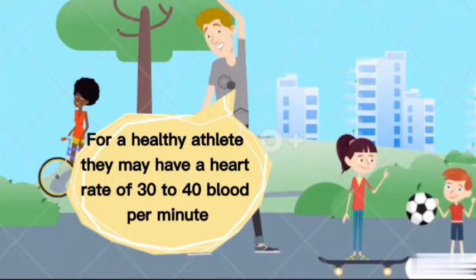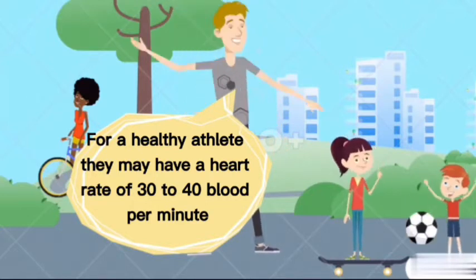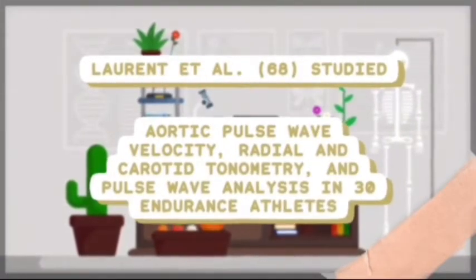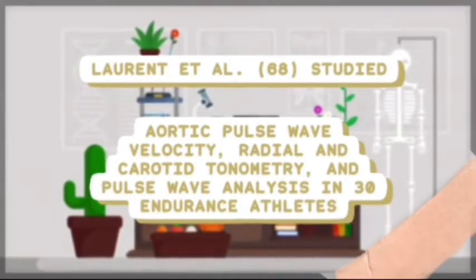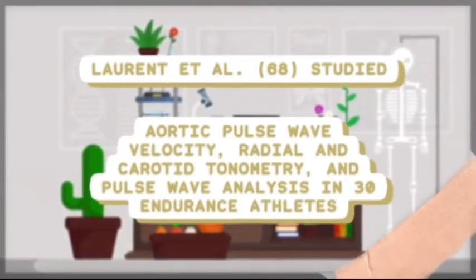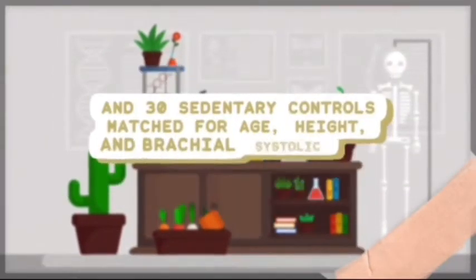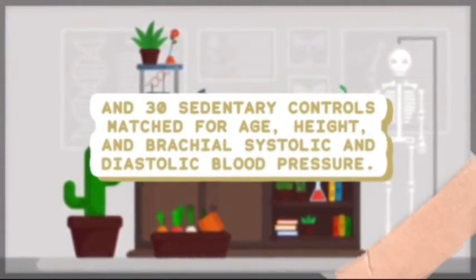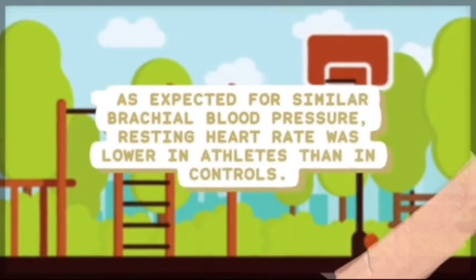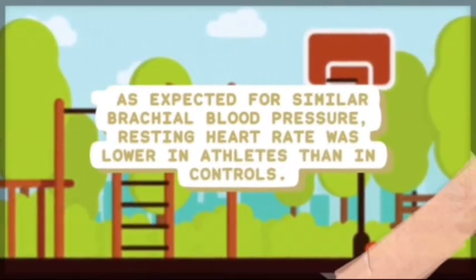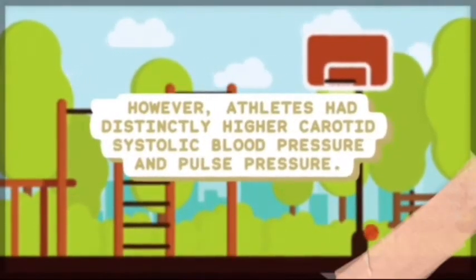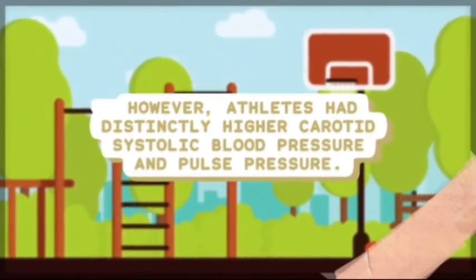But for a healthy athlete, they may have a heart rate of 30 to 40 beats per minute. Lauren et al. studied aortic pulse wave velocity, radial and carotid tonometry, and pulse wave analysis in 30 endurance athletes and 30 sedentary controls matched for age, height, and brachial systolic and diastolic blood pressure. As expected for similar brachial blood pressure, resting heart rate was lower in athletes than in controls. However, athletes had distinctly higher carotid systolic blood pressure and pulse pressure.